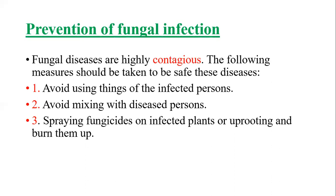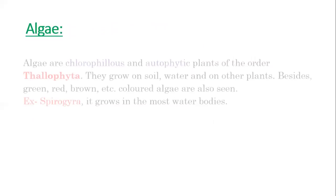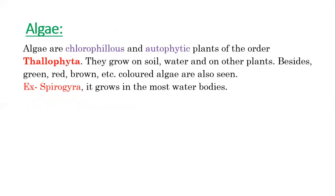Do you know what algae are? Algae are chlorophyllous and autotrophic plants of the water. They grow on soil, water and on other plants. Besides green, red, brown and other colored algae are also seen. For example, Spirogyra, which grows in moist water bodies.